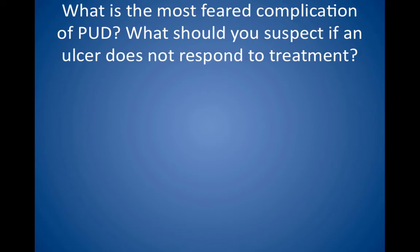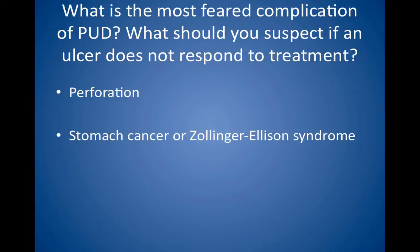What is the most feared complication of peptic ulcer disease? What should you suspect if an ulcer does not respond to treatment? The most feared complication of peptic ulcer disease is perforation. Look for peritoneal signs, history of peptic ulcer disease, and free air on an abdominal radiograph. Treat with antibiotics such as ceftriaxone and metronidazole, and laparotomy with repair of the perforation. If ulcers are severe, atypical, or non-healing, think about stomach cancer or Zollinger-Ellison syndrome. Peptic ulcer disease is also a cause of GI bleeding, which can be severe in some cases.